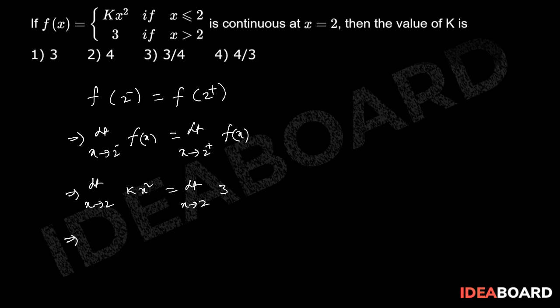That implies 4k equals 3, so k equals 3 by 4. The correct answer is the third option.